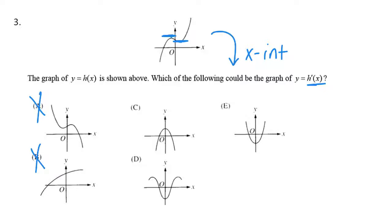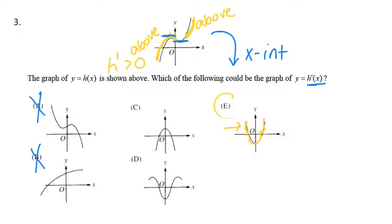The function is increasing over this interval, and also increasing here. That means we have to be above the x-axis in both regions, because if my original function is increasing, the derivative is positive — h prime is greater than zero. So before I cross I need to be above the x-axis, and then we go to zero, then decrease, then go back above. That means the answer is E: above, x-intercept, below, x-intercept, and above.